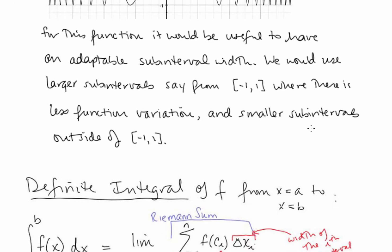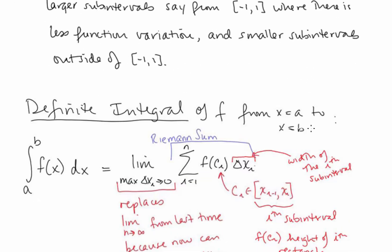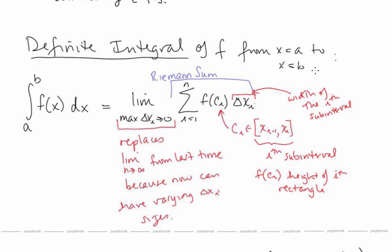Now let's look at the definition for the definite integral of f from x equals a to x equals b. The symbol is an elongated s — our definite integral symbol — with a lower bound of a and upper bound of b, and f of x with dx inside. This notation means the limit as the maximum delta x i goes to 0 of the summation i going from 1 to n of f of c i delta x i.